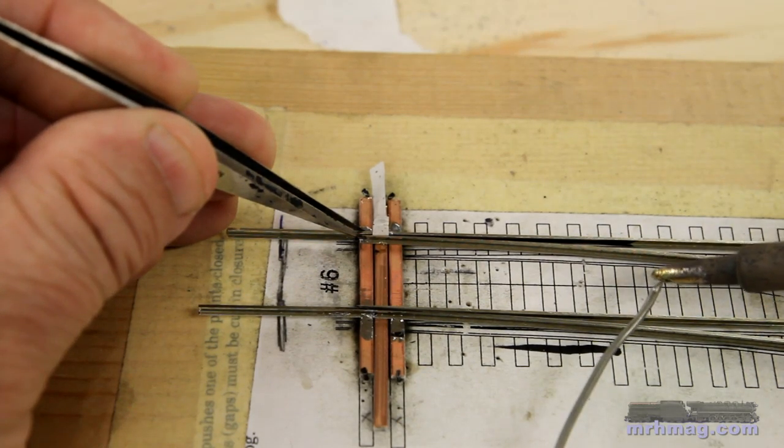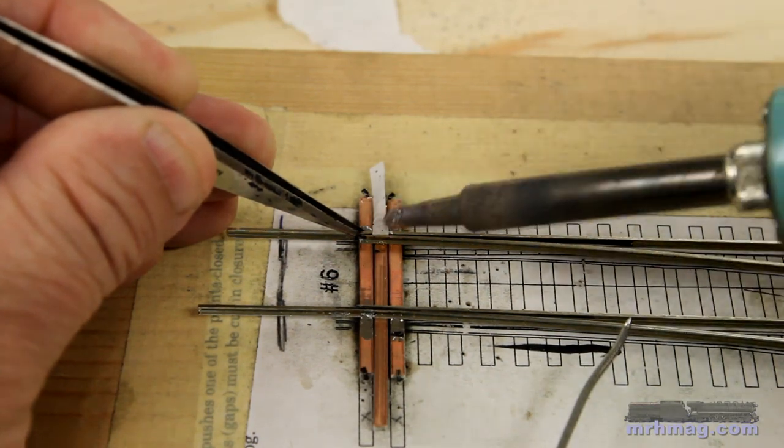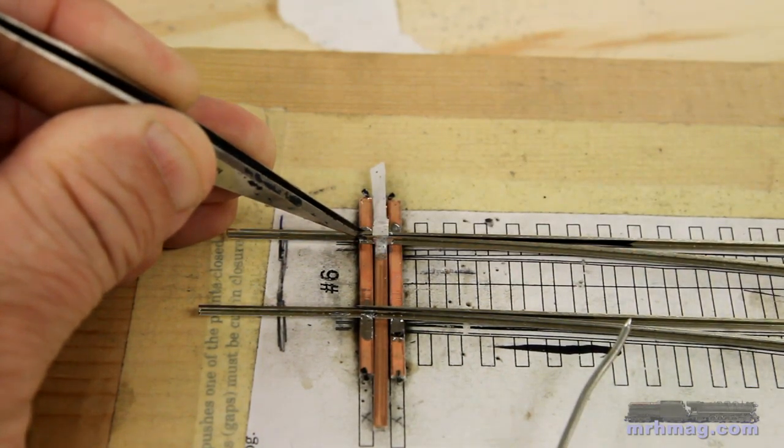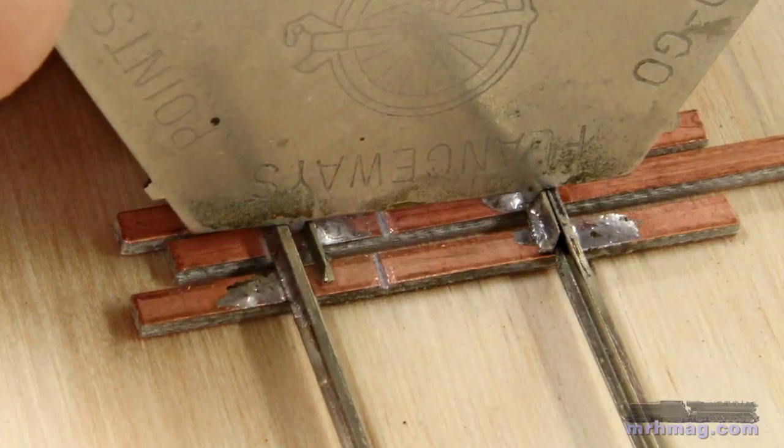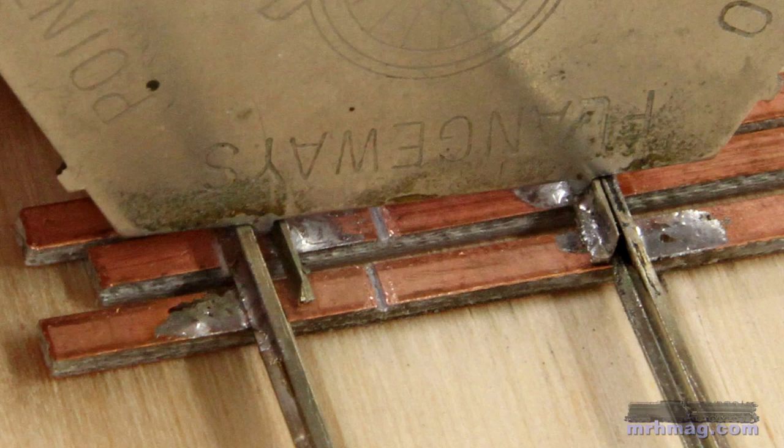I grab a small amount of solder with the tip of my soldering iron and touch it to the throw bar and point. Presto, instant joint. Be sure the gauge between the inside of each point and the opposing stock rail is correct. Also make sure there is at least a flangeway width of gap between an open point and its stock rail.